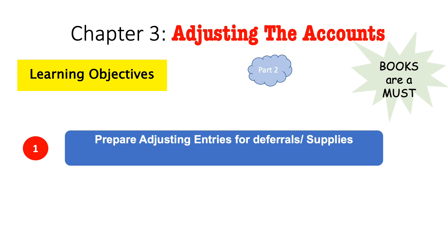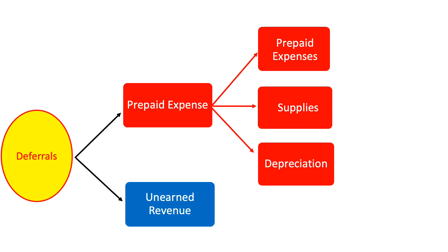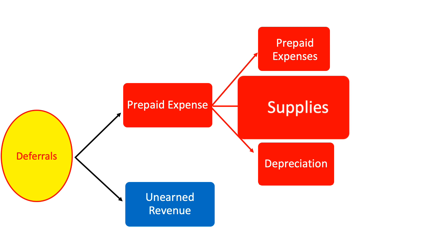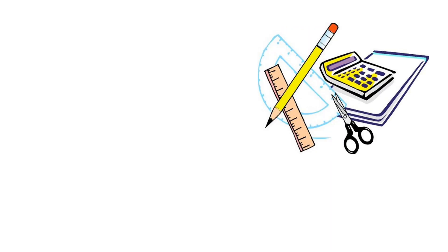Chapter 3, Adjusting the Accounts, Part 2. During this presentation we will be talking about deferrals, and specifically supplies. As mentioned earlier, under deferrals we have prepaid expenses and unearned revenue. Under prepaid expenses we have prepaid expenses, supplies, and depreciation. During this presentation we will be focusing on supplies.